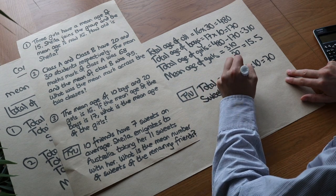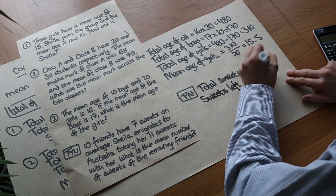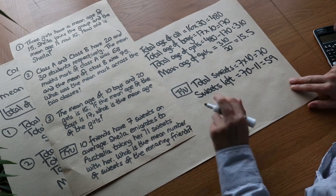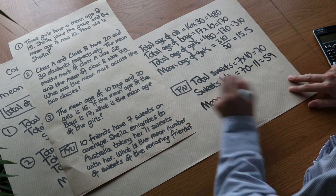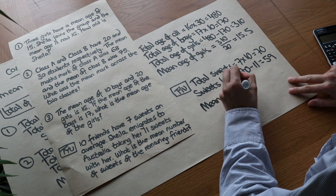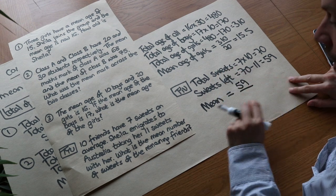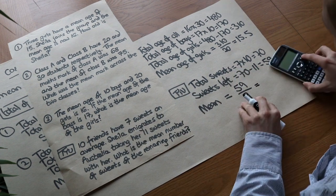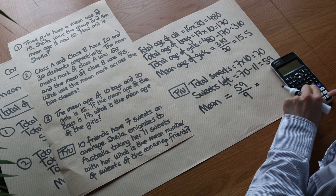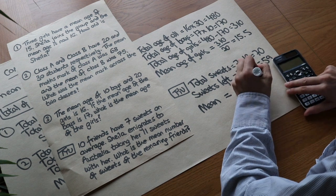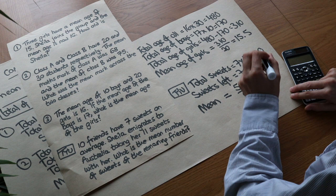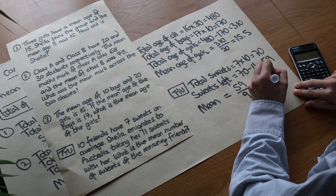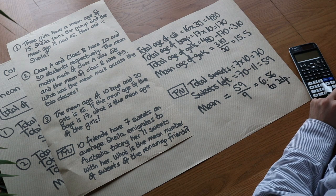Sheila emigrates taking 11 sweets, so the sweets left equals 70 minus 11, which leaves 59 sweets. The mean of the remaining sweets is the total sweets (59) divided by the number of remaining people — there were 10 friends but now there are 9 left because Sheila's gone. 59 divided by 9 gives 6.56 to two decimal places.